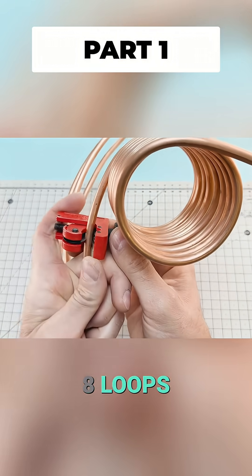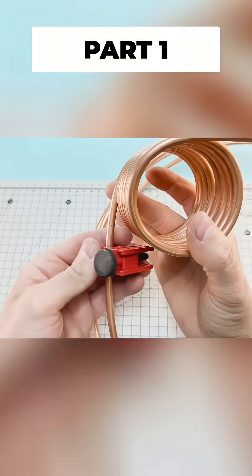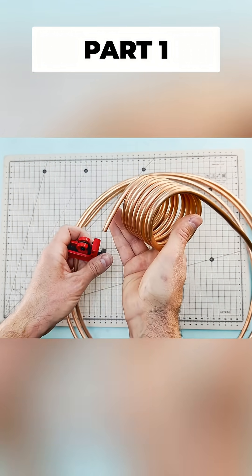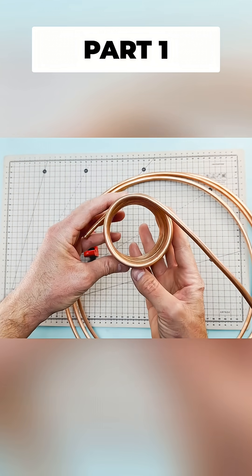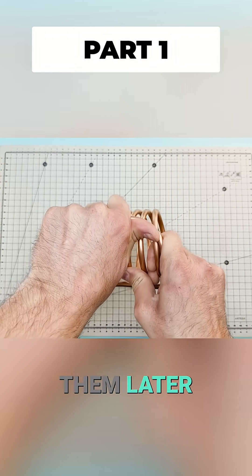Once we have about eight loops we proceed to cut the tube and slightly bend the ends so we can connect them later on.